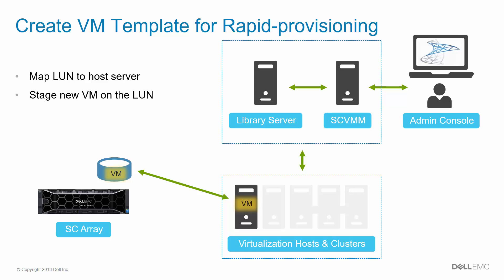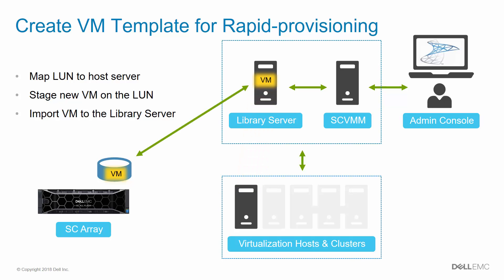Stage a new VM, add desired roles, features, and applications, and patch it to the desired level. Once the VM is fully staged and patched, import the VM to the library server as a new template. SCVMM will sysprep the VM as it is imported. Once imported, this LUN and the VM it contains will serve as a gold image for deploying new VMs with rapid provisioning.